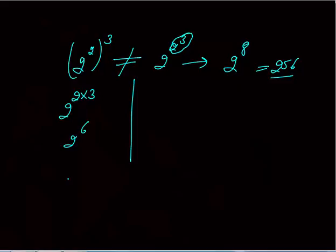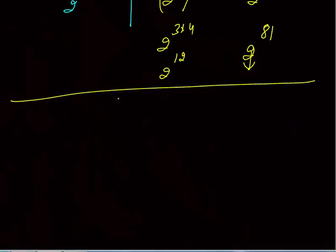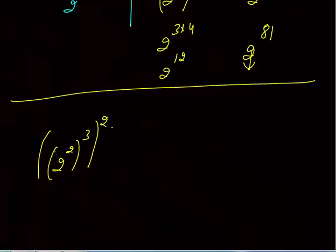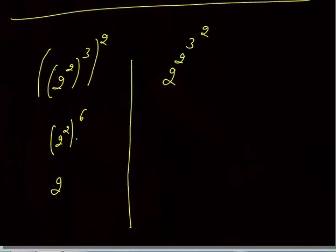Take another example: (2^3)^4 = 2^(3×4) = 2^12. But 2^(3^4): here 3^4 = 81, so it becomes 2^81. Now consider 2^((2^3)^2) vs 2^(2^(3^2)). In the bracketed case, (2^3)^2 = 2^6, so the expression is 2^(2×6) = 2^12. This illustrates how brackets drastically change the result.